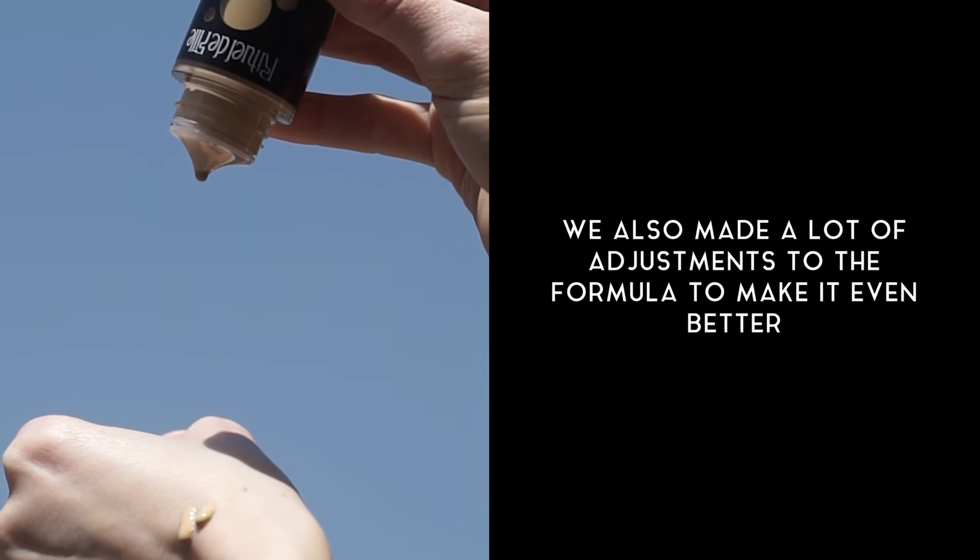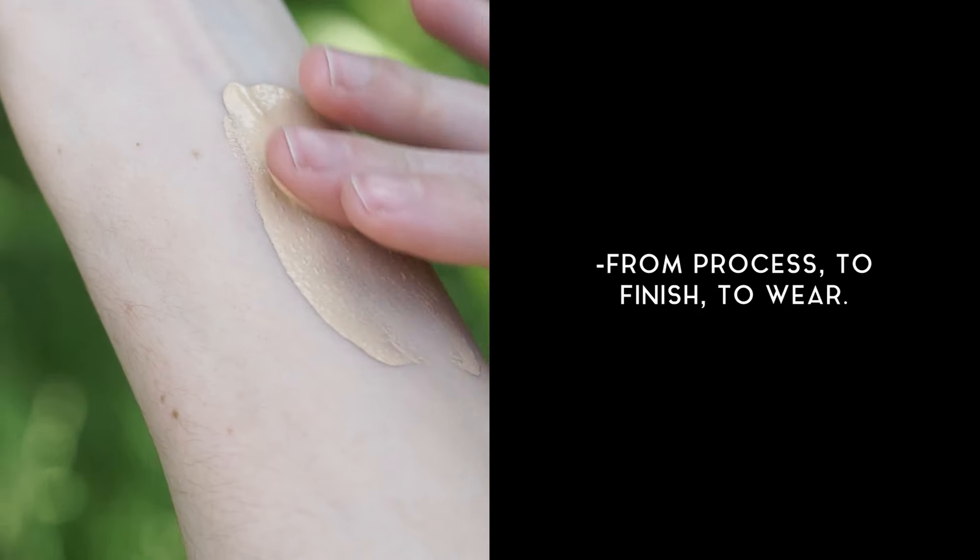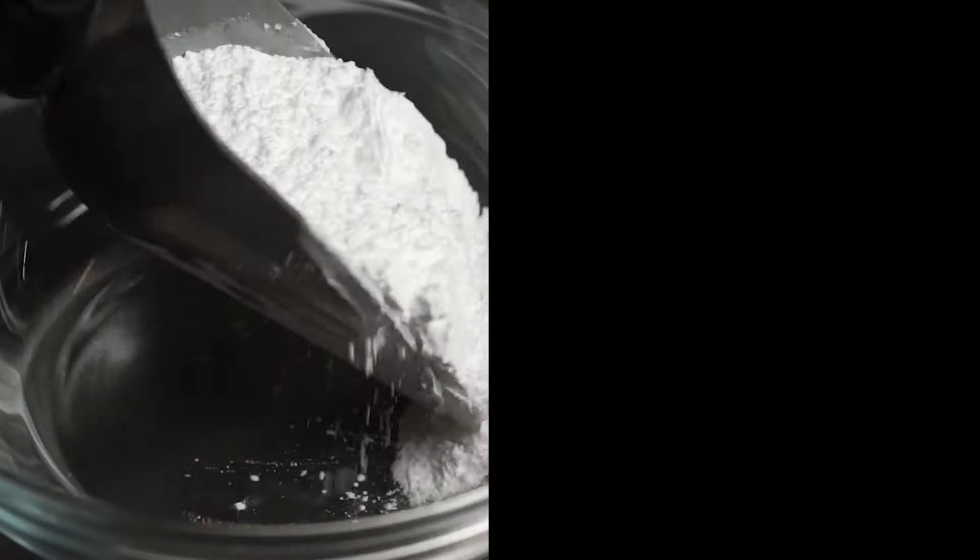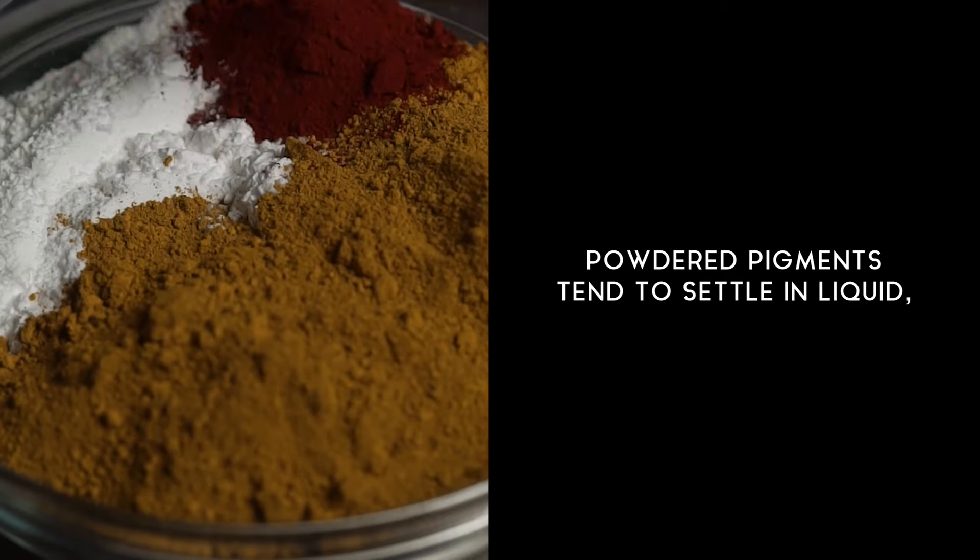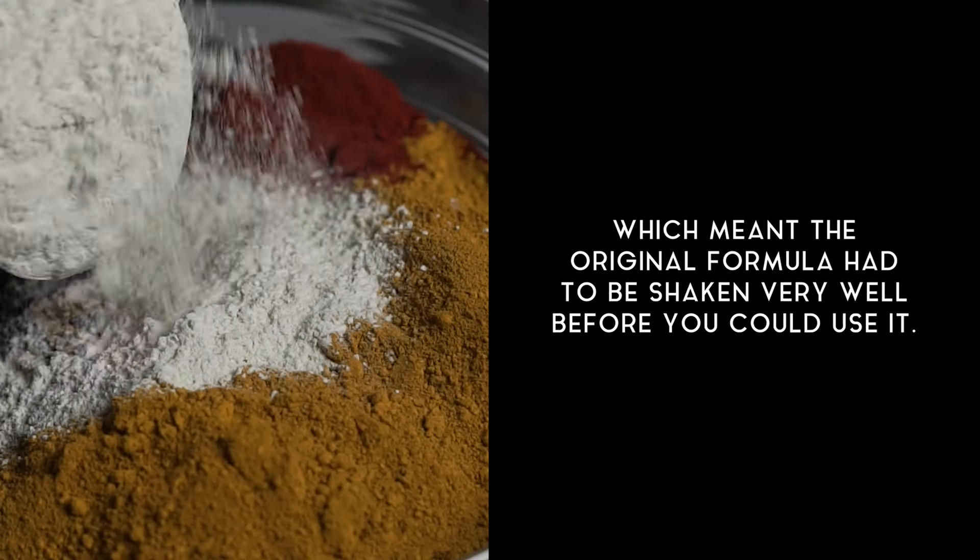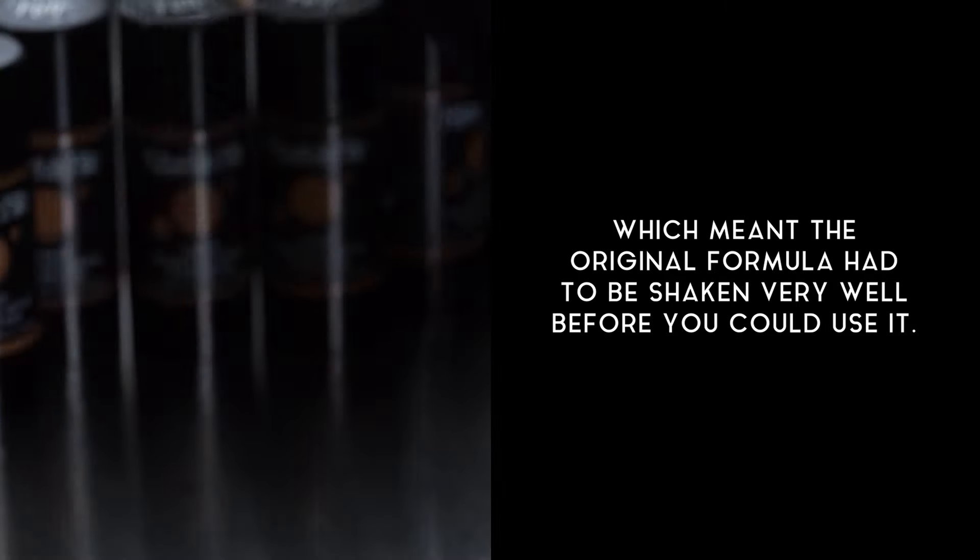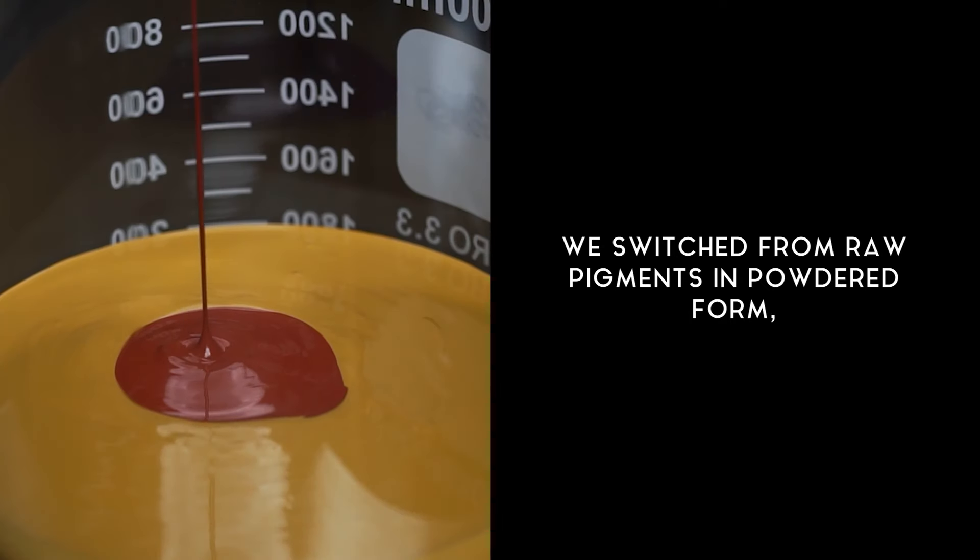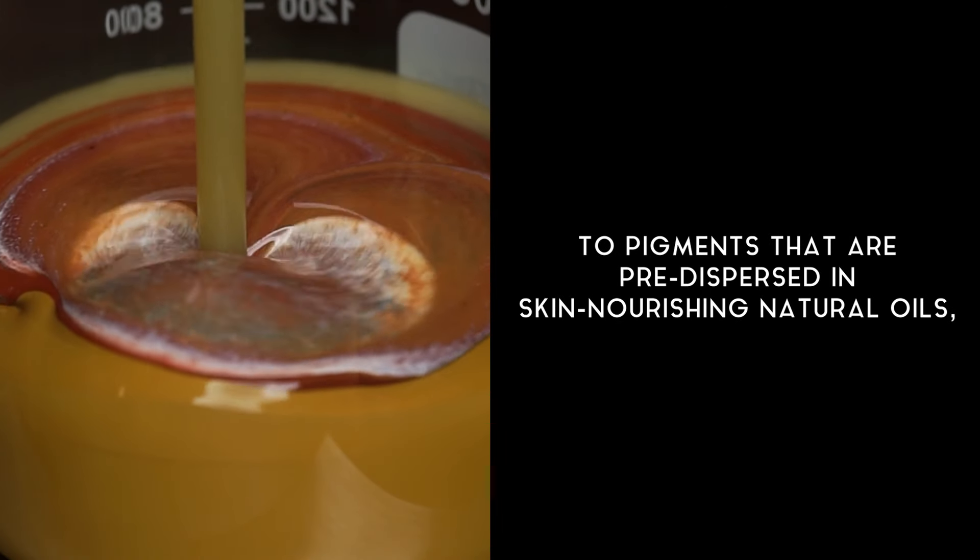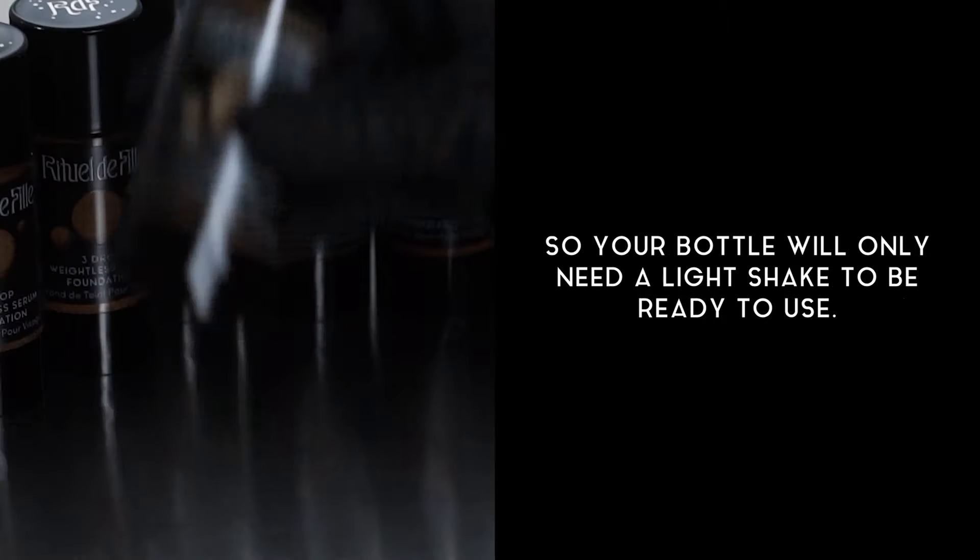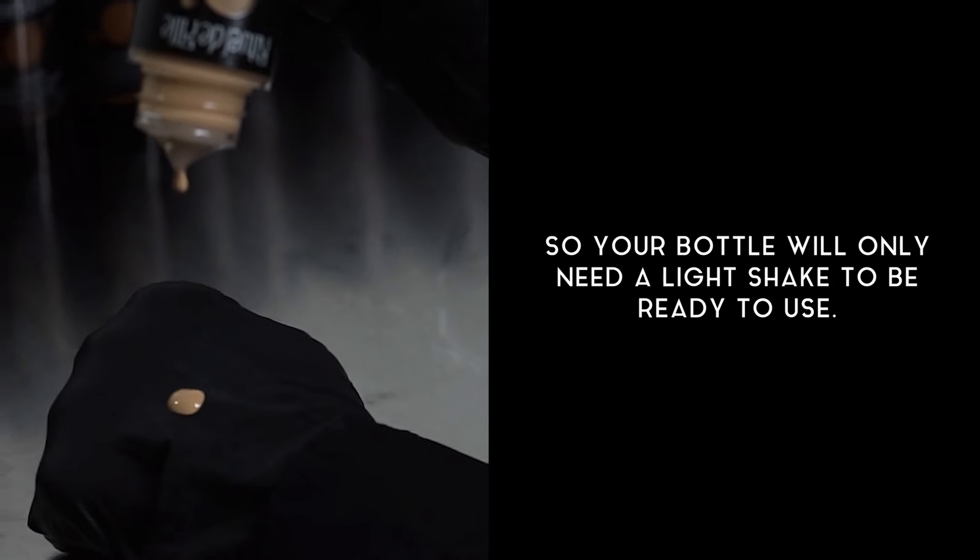We also made a lot of adjustments to the formula to make it even better, from process to finish to wear. Powdered pigments tend to settle in liquid, which meant the original formula had to be shaken very well before you could use it. So we switched from raw pigments in powdered form to pigments that are pre-dispersed in skin-nourishing natural oils, so your bottle will only need a light shake to be ready to use.